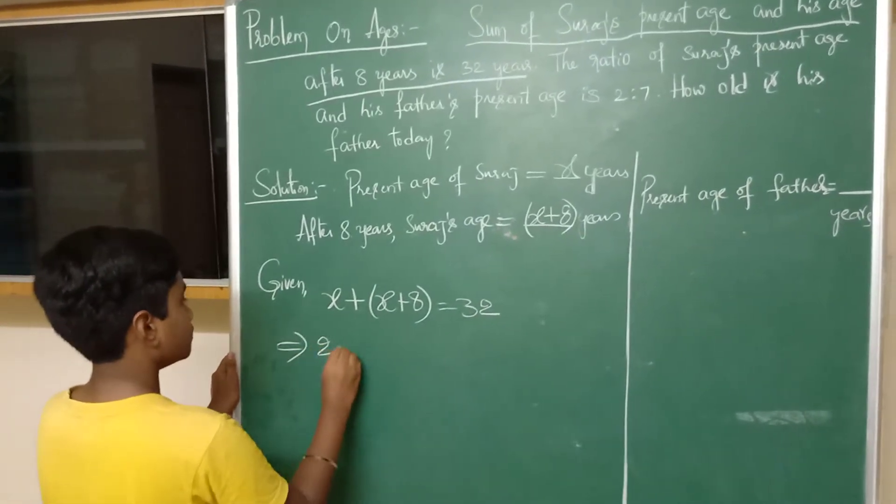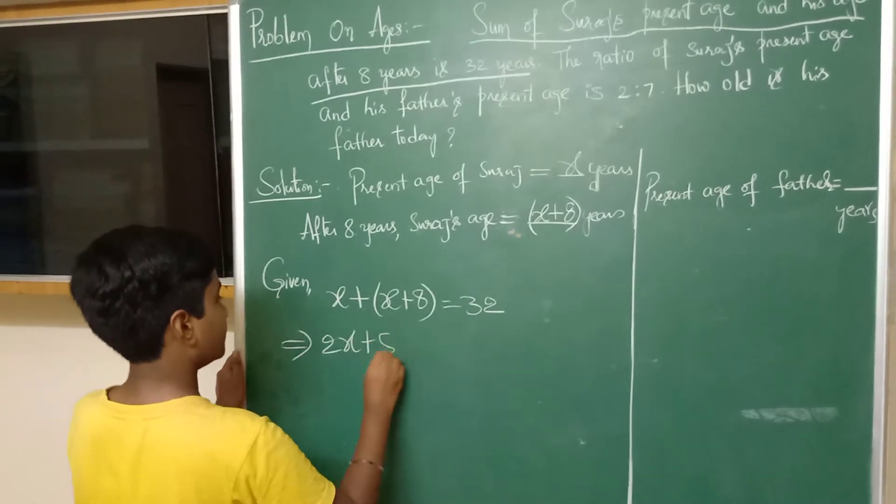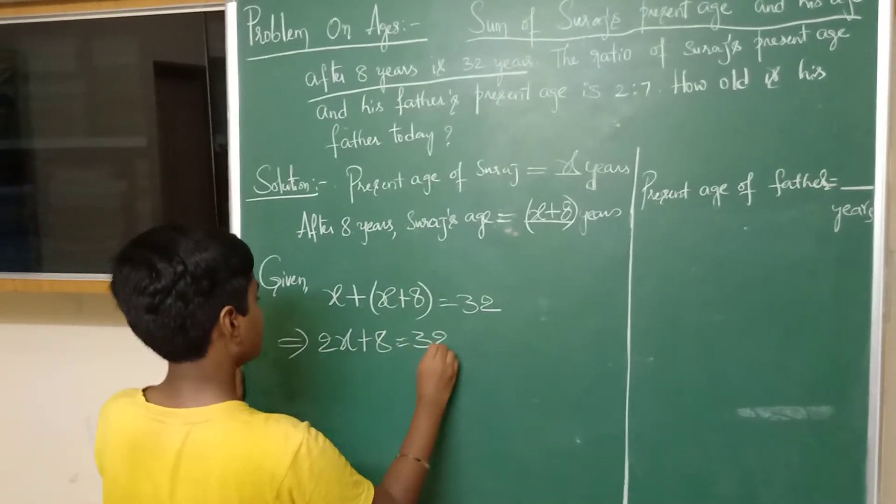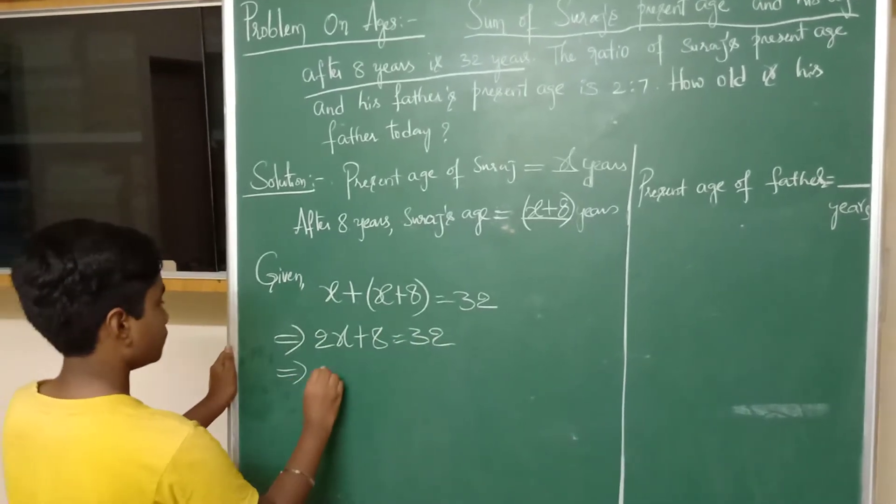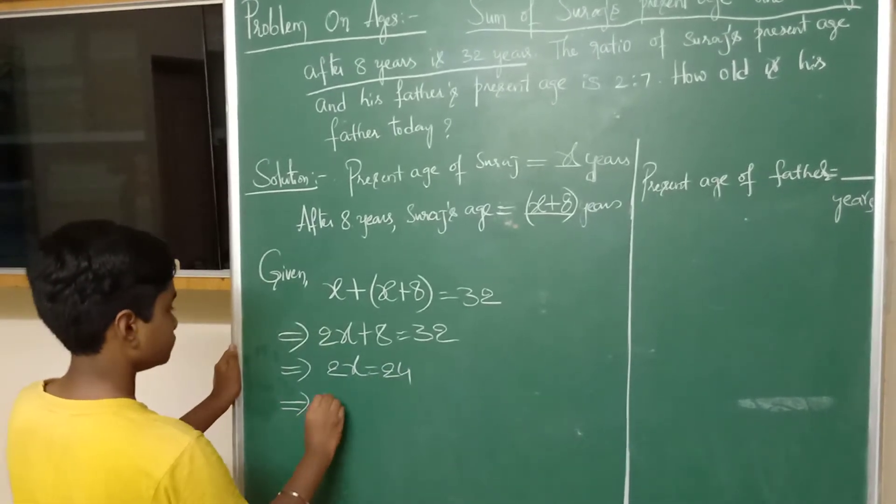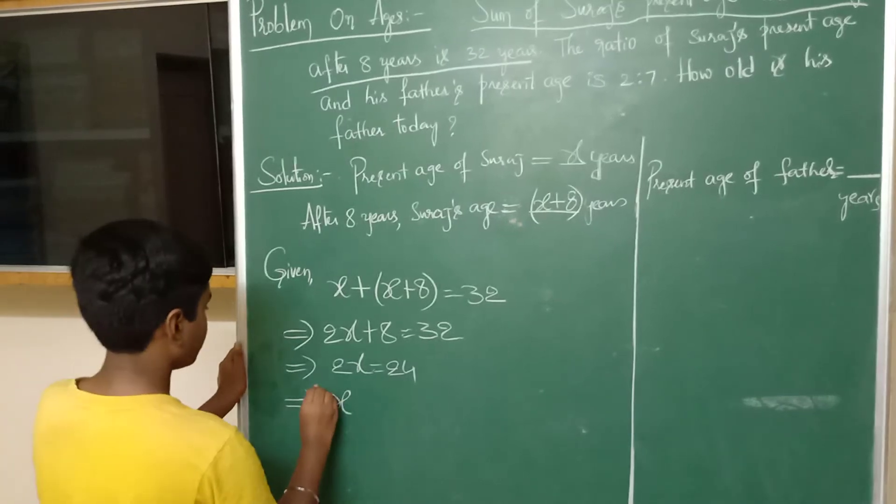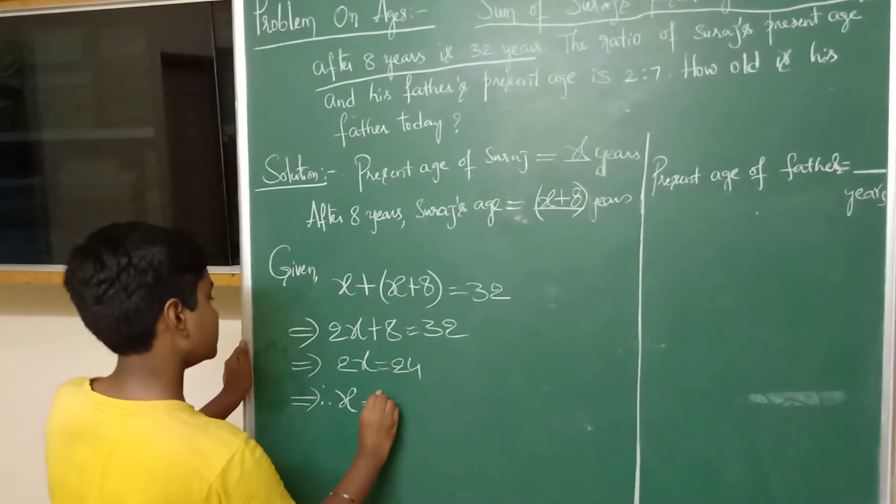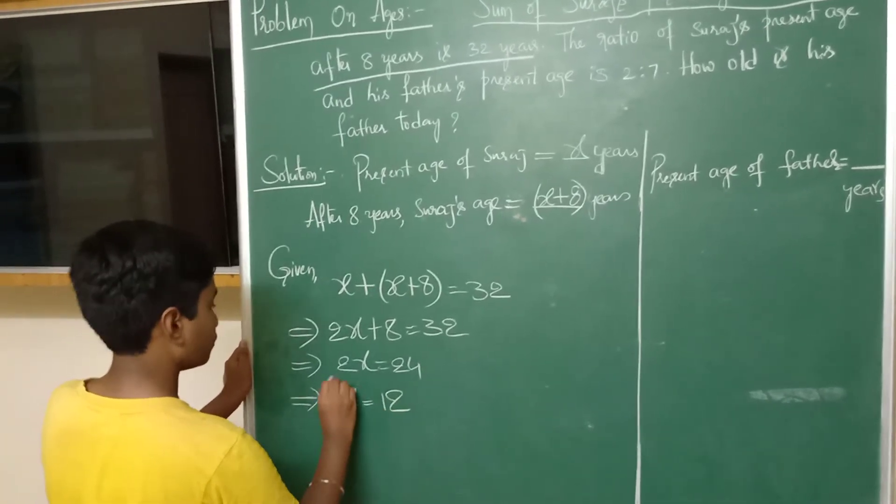Simplify. 2X plus 8 is equals to 32. 2X is equals to 24. Therefore, X is equals to 12 years.